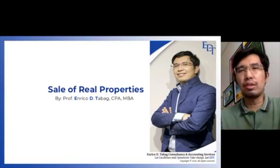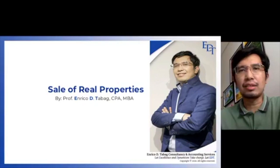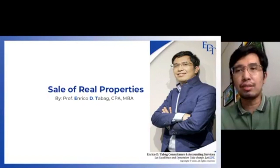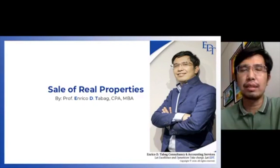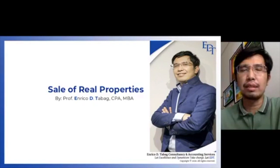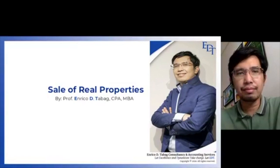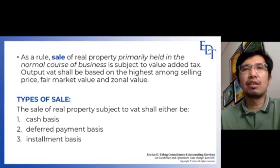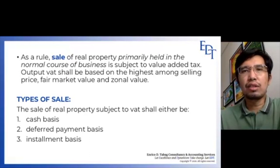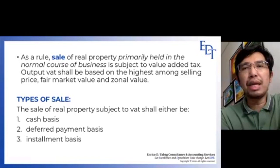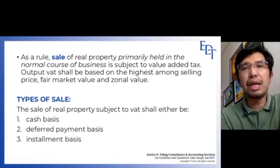As previously discussed in our VAT exempt sales videos, we already covered which real properties are exempt from VAT under the law. What we are going to do here is illustrate how to compute the applicable output VAT in relation to real properties. As a rule, sale of real property primarily held for sale or for lease in the ordinary course of trade or business is subject to VAT at the rate of 12%.